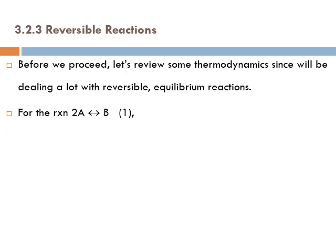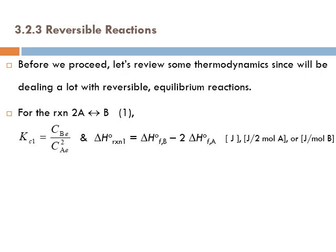For the reaction where two moles of A gives you one molecule of B, you can write Kc for this reaction. The concentration equilibrium constant is written as the concentration of B at equilibrium divided by concentration of A at equilibrium raised to the power 2. The standard delta H reaction is simply the standard delta H formation for B minus two times the standard delta H formation for A.